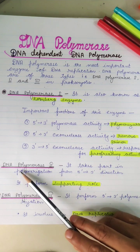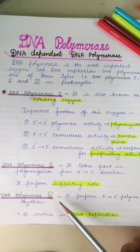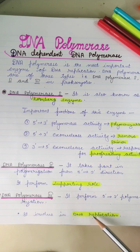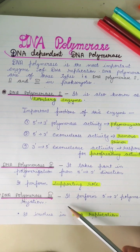Next is DNA polymerase 3. It performs 5' to 3' polymerization and is involved in DNA replication.